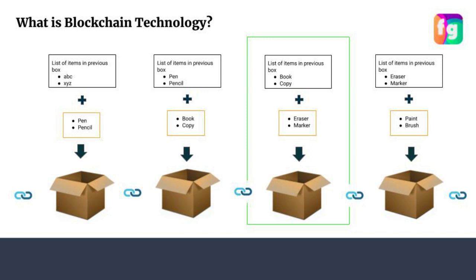That list is just a form of representation — the items from the previous box. So you have created a link of boxes together. We've now got three advantages: first is security, second is interlinked data, and third is traceability. Whenever you want to trace data — suppose you open the third box and you want to find where the books are — you can navigate to the previous block and see that the book is there, and it also has information about all the previous blocks.